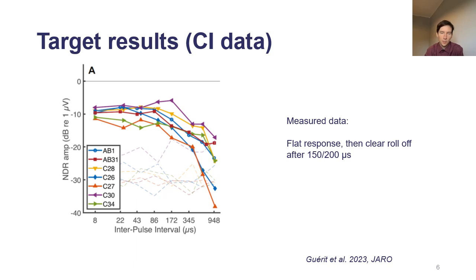On the y-axis, the amplitude of the neural distortion response. What we saw is that the neural distortion response is pretty constant from 0 to about 200 to 300 microseconds, but then it drops to be in the noise floor at the longest gap tested of one millisecond.